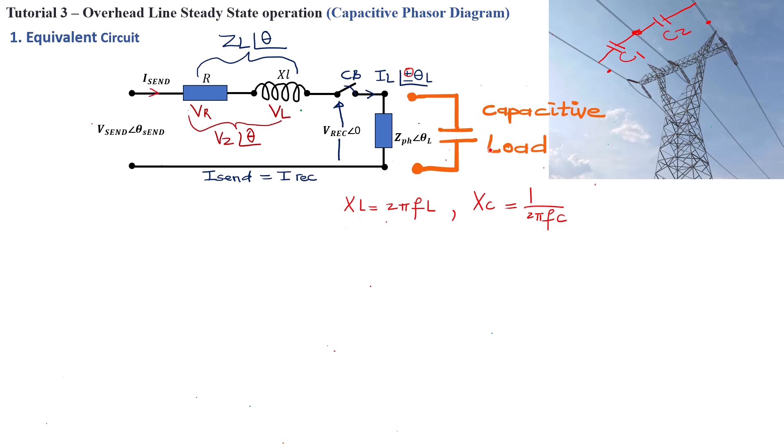Now we know that for a capacitive load for our short transmission line operation here, we know that the current, the load current IL, is going to be leading the voltage by an angle here. So it's basically a positive angle. We can now use this information with the information that we already know about the voltage drop across the transmission line. We can now draw our capacitive phasor diagram.